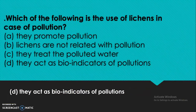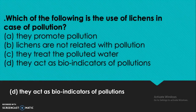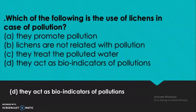Regarding the use of lichens in case of pollution — they act as bio-indicators of pollution. Lichens are plants that grow on rocks, structures, or even the trunks of trees, but they grow only in fresh air. If there is sulfur dioxide in the atmosphere, lichens will not grow. So lichens act as bio-indicators of pollution.